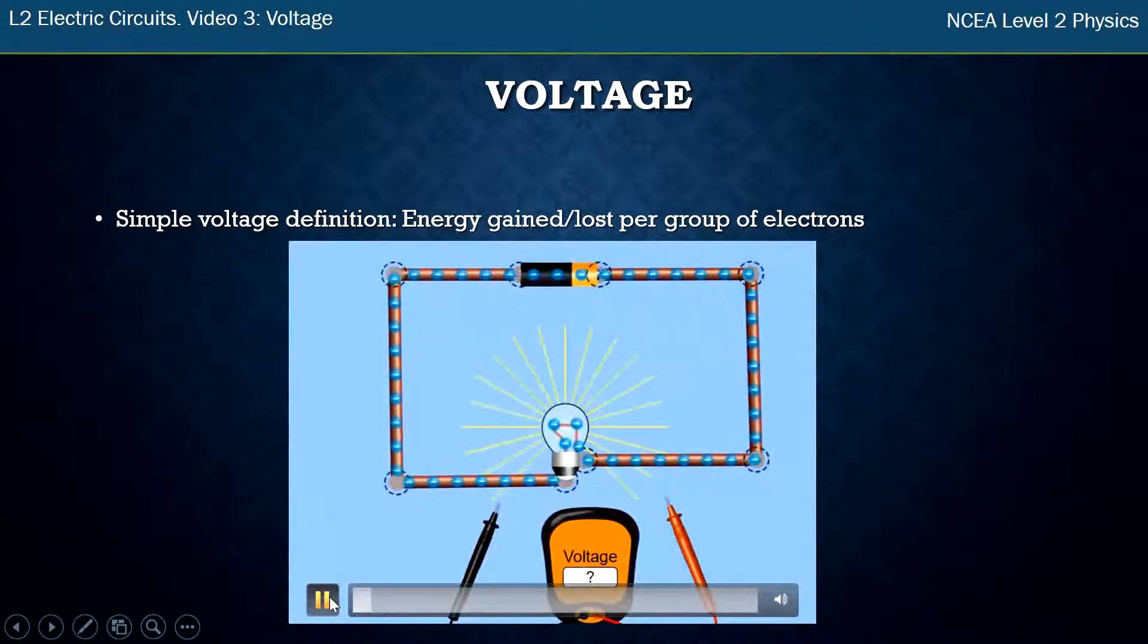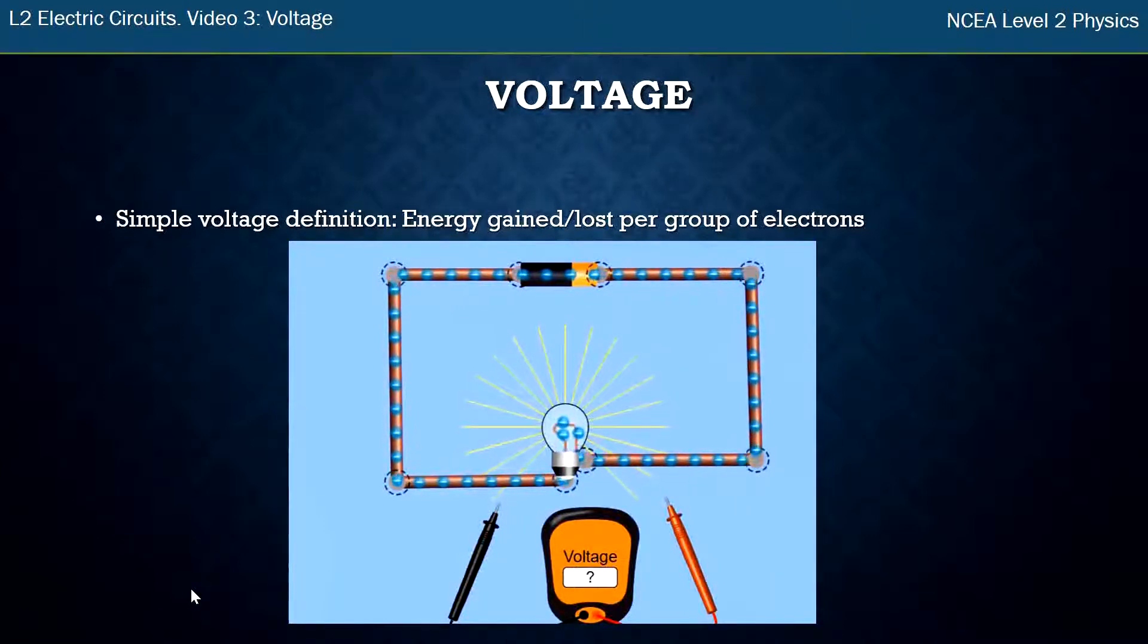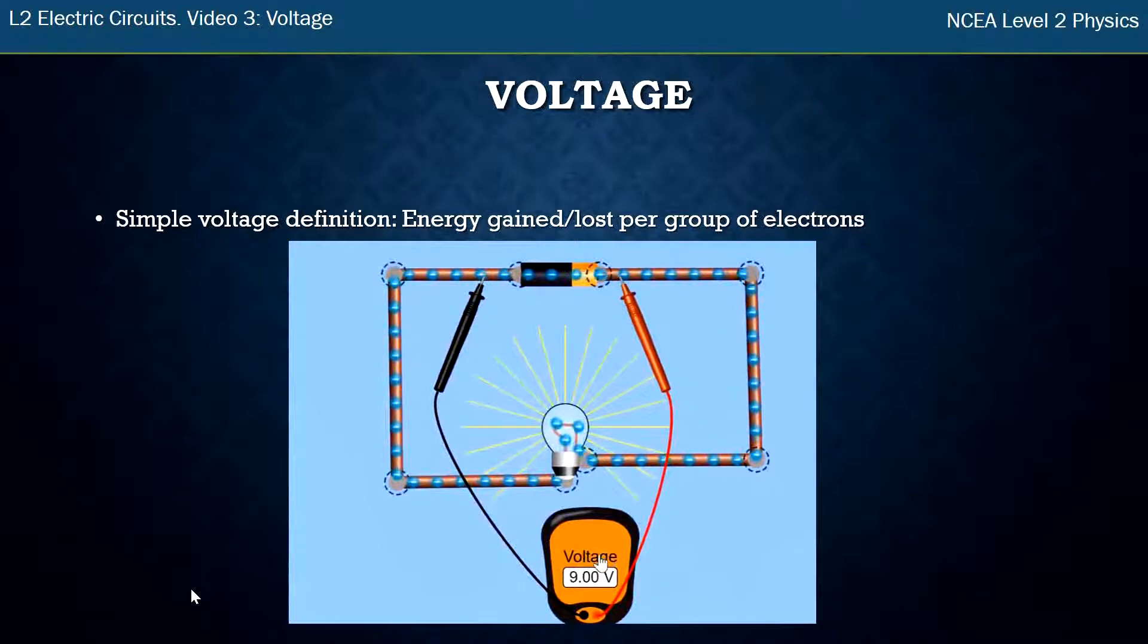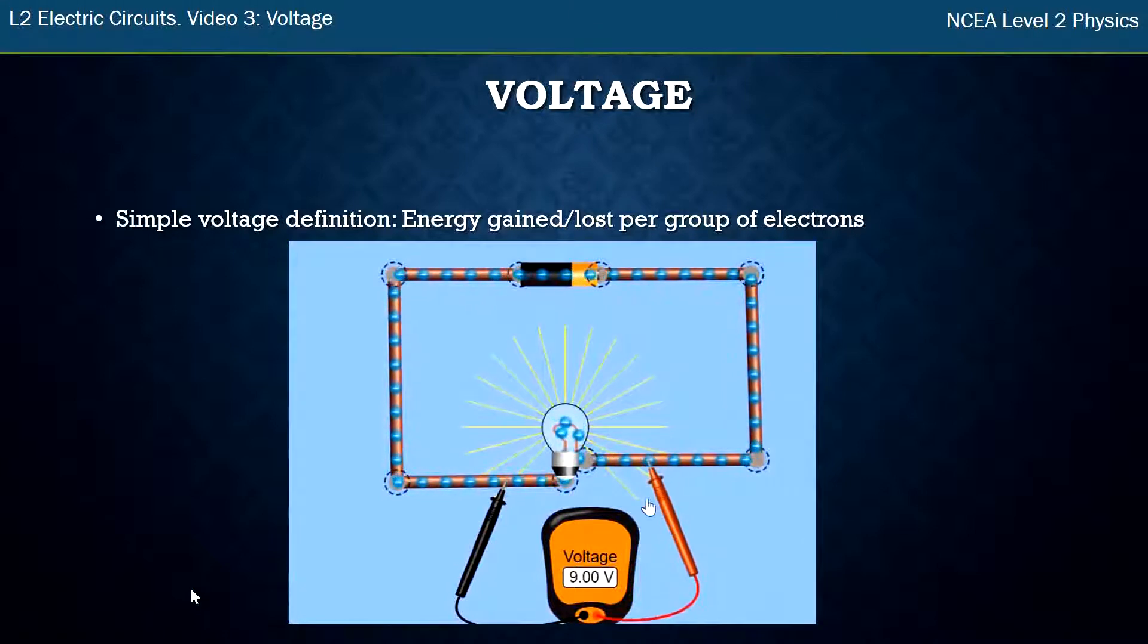So I have a circuit here, and there is electrons flowing from the battery through the bulb and back round to the battery again. And I've got a voltmeter. So what I'm going to do is with the voltmeter, I need to put it on either side of the battery, and I can measure the voltage of the electrons going through the battery. So that's the energy difference. They gain 9 volts.